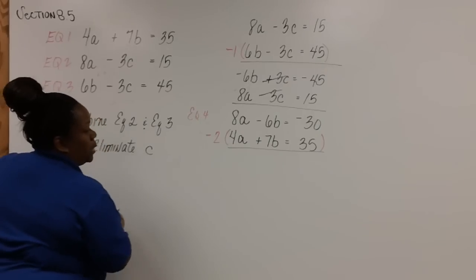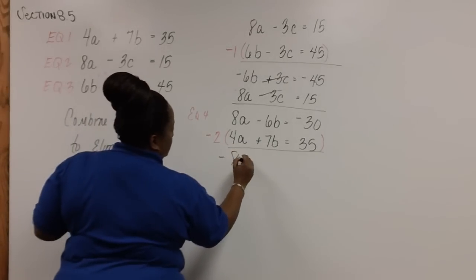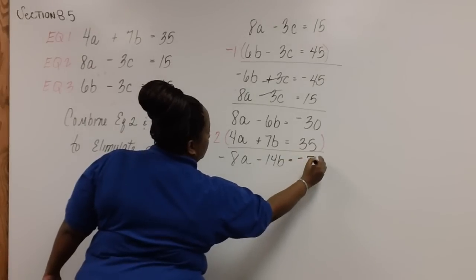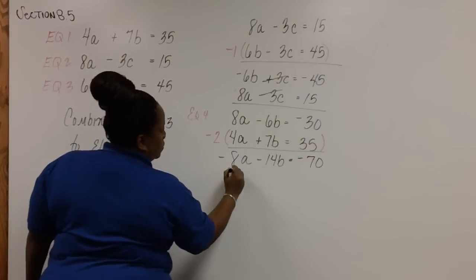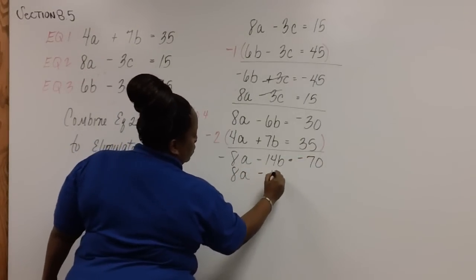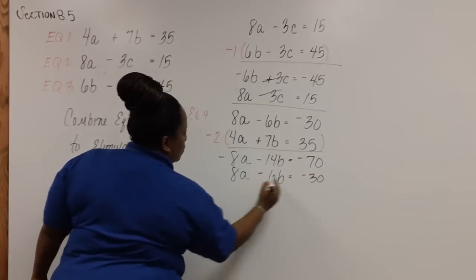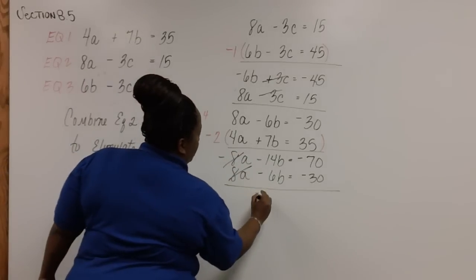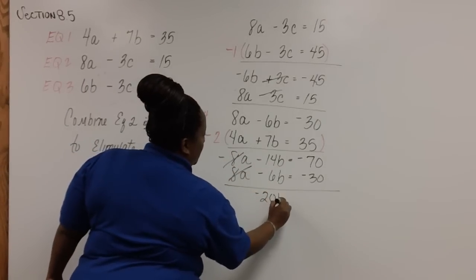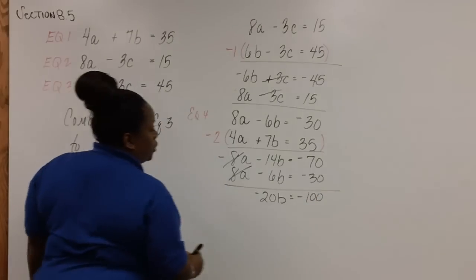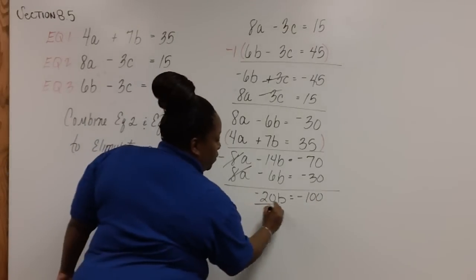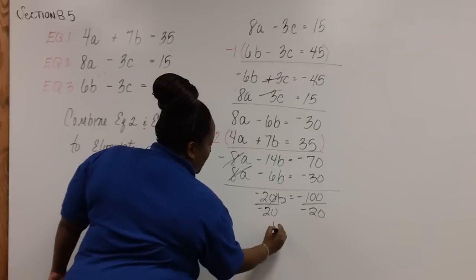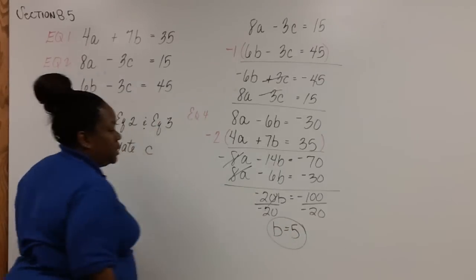So after multiplying by negative two, we get this. And I'll just bring this one down. Notice that the A's have been eliminated. And we're left with negative 20B equals negative 100. And after dividing both sides by negative 20, we find that B is equal to positive five.